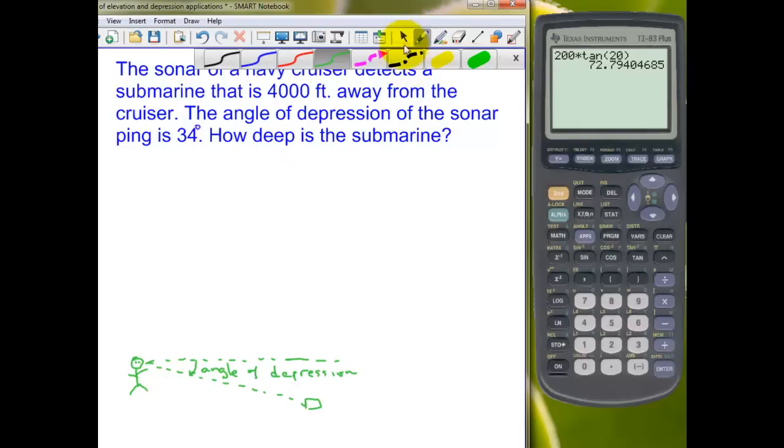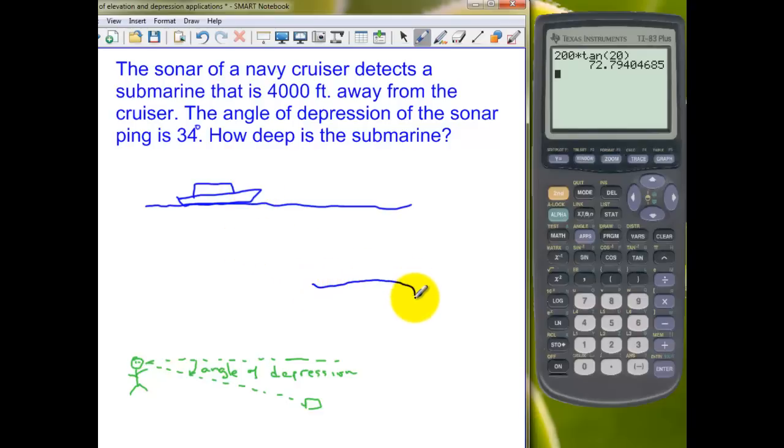And they point the sonar at a particular angle that they've determined and measure and they get the ping back on the sonar that the sub is 4,000 feet away and we want to know what's the depth of the submarine. So I'm not a good artist, but let's again sketch something. So we have the surface of the water here and we have a boat, some kind of cruiser here on the water. And under the water down here somewhere we have a submarine. And when we are sending the sonar waves down at the submarine and we get the ping back, we are told,